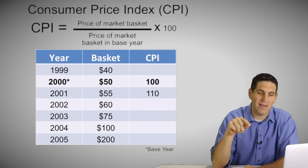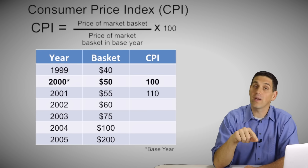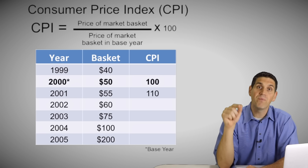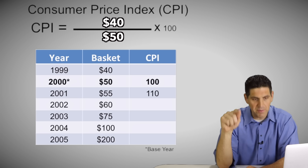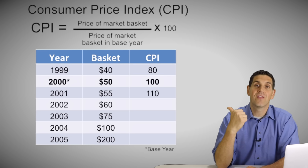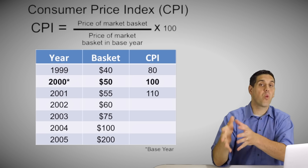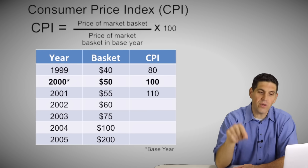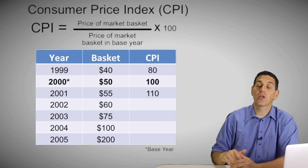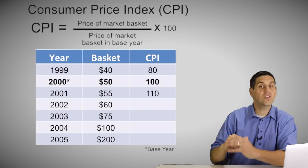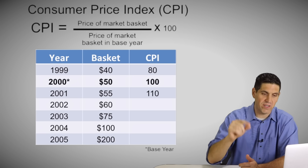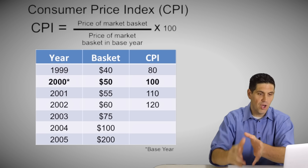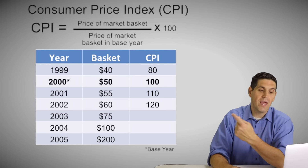For 1999, the market basket is $40, which is less than 50, so this number will be less than 100. It's 40 divided by 50 times 100 — gives you 80. The CPI is 80, meaning prices were 20% less in 1999 than in 2000. For 2002, notice you're not looking from 55 to 60 — you're always going back to the base year. So it's 60 divided by 50 times 100, which pops out 120. The CPI for 2002 is 120.